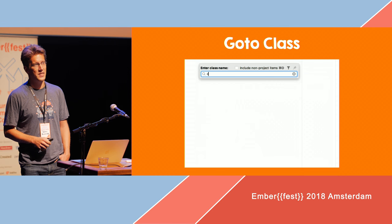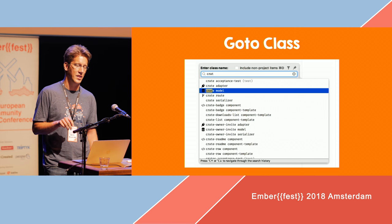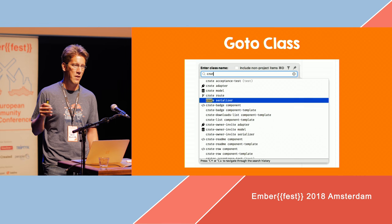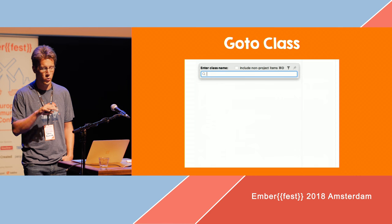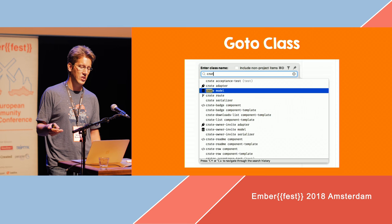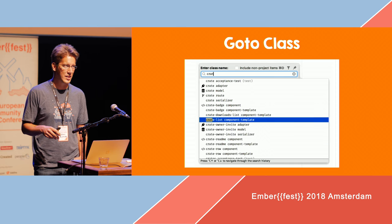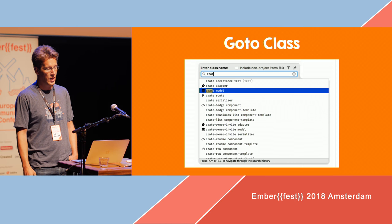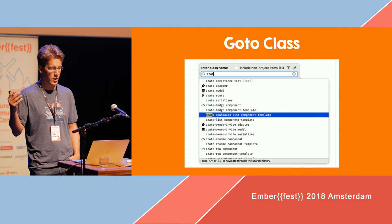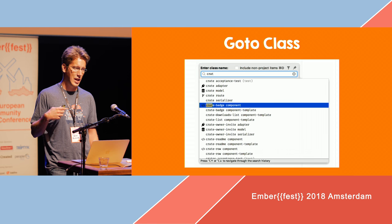IntelliJ has this feature where you can press a keyboard shortcut and go to a specific class. The problem is, with Ember objects, those objects don't have names by default, because we don't write the name anywhere in the file — it's only the file name that matters. So IntelliJ wasn't able to handle that properly. That's one of the first things I did for the IntelliJ plugin, so that I could write the name of a component, a model, an adapter, whatever, and it would automatically get me to that class.